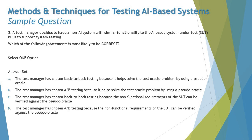Moving on to the next question: a test manager decides to have a non-AI system with similar functionality to the AI-based system under test — the SUT — built to support system testing. That means they are trying to blend things together, having a non-AI-based system with similar functionality to the AI-based SUT to support system testing. Which of the following statements is most likely to be correct?